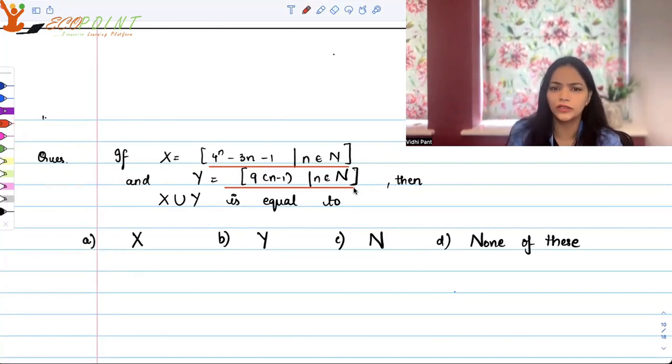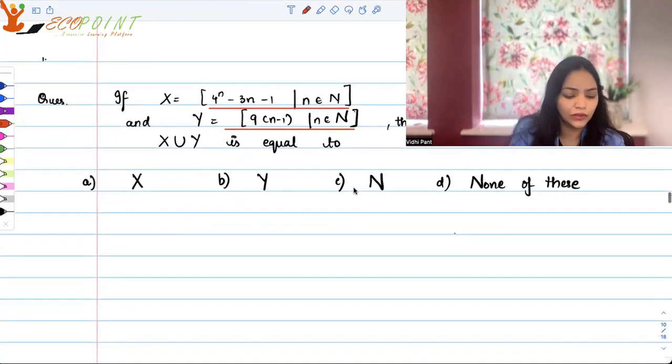So either what you can do is you can just start putting in natural numbers in there and figure out what kind of values X will have, what kind of values Y will have. Otherwise, I'll just tell you a simple trick to figure out what X actually contains.